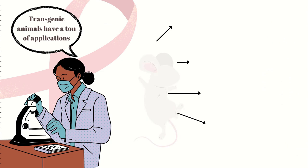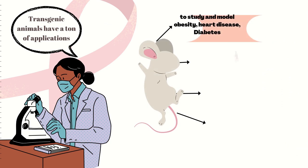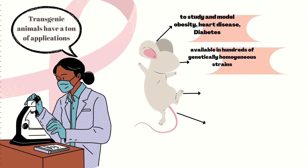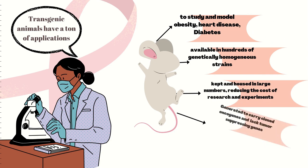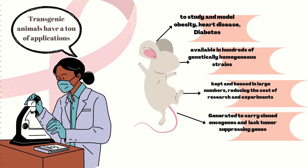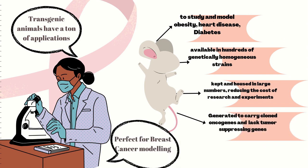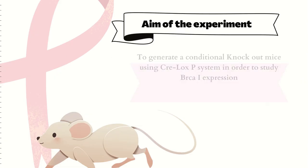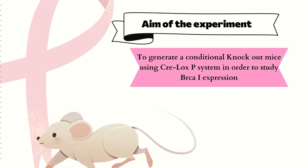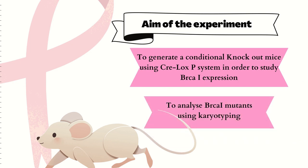You must be wondering the significance behind using transgenic mice. Well, there are many strains to begin with — they can be housed and grown efficiently, and are widely used to study heart disease and can be genetically manipulated to produce certain proteins, altogether making them the best candidates for breast cancer modeling. The aim of this video is to generate a BRCA1 conditional knockout mice using the Cre-lox P system and to evaluate these mutants using karyotyping.